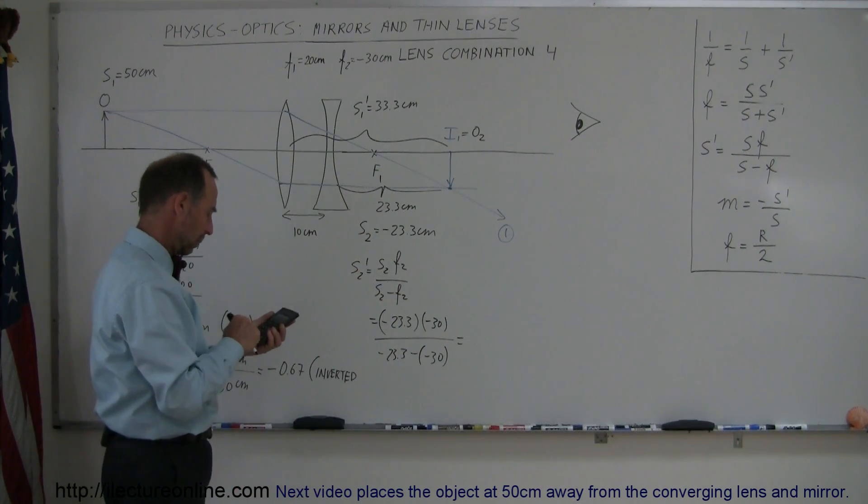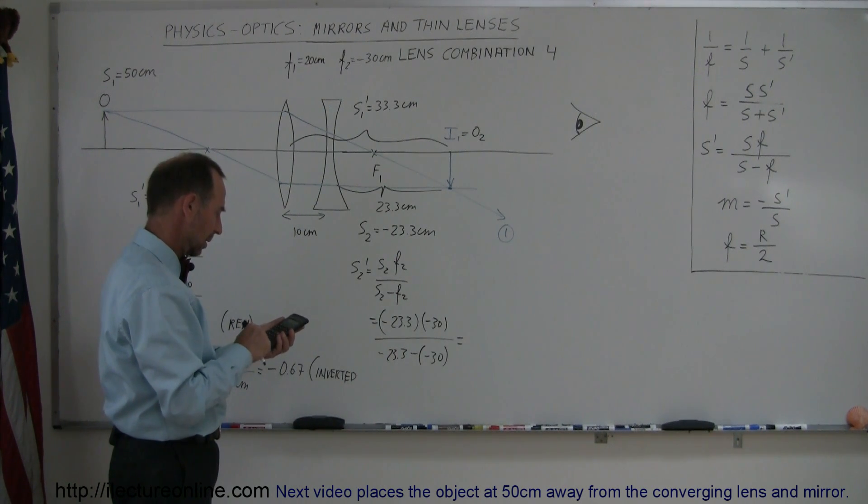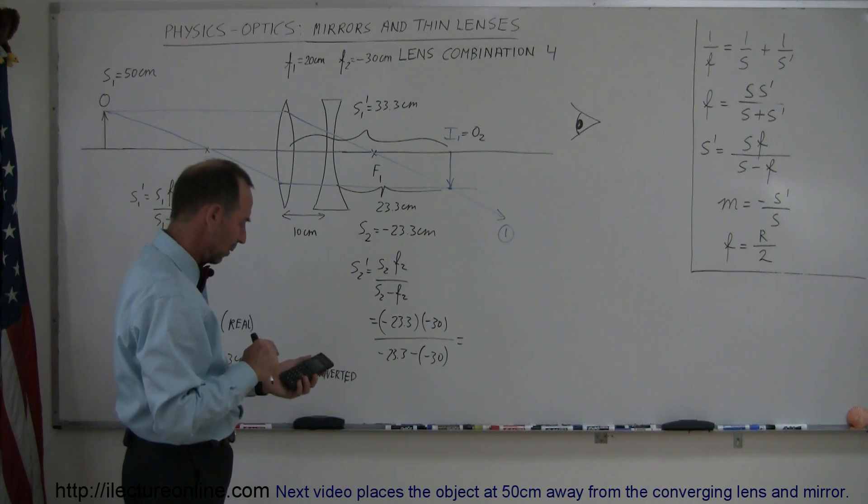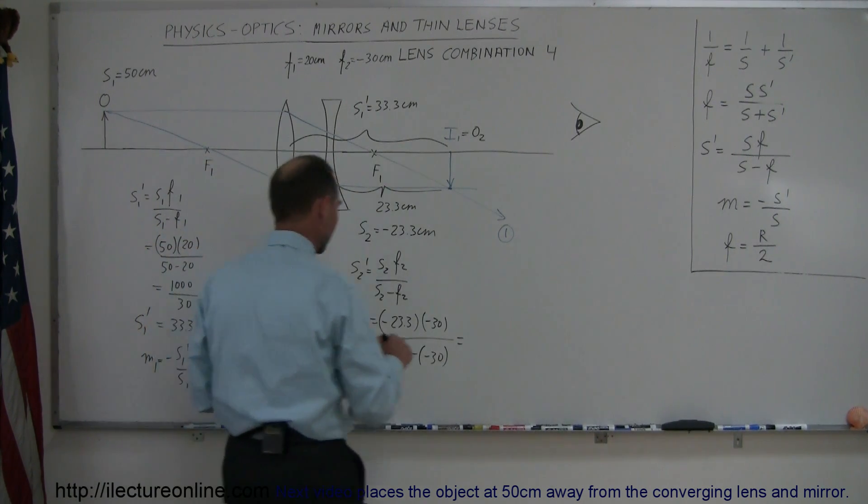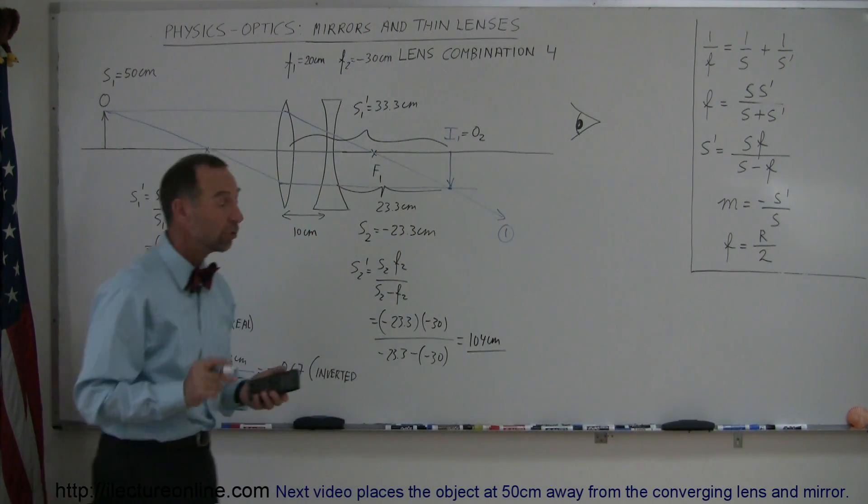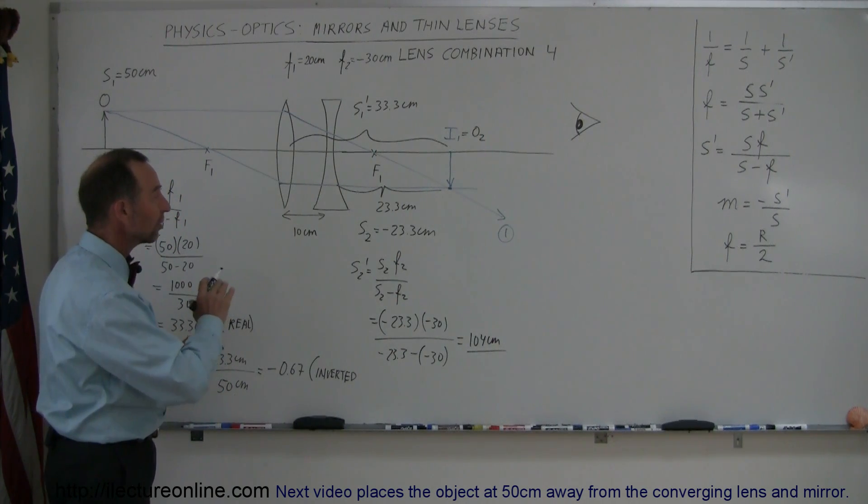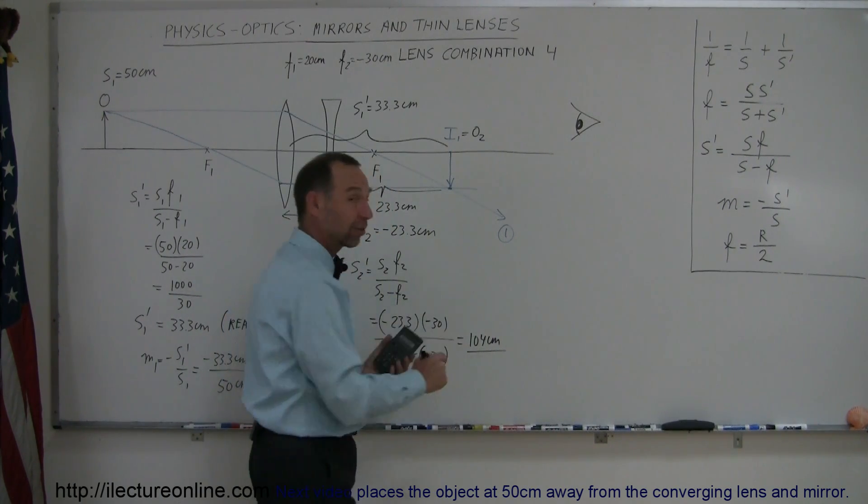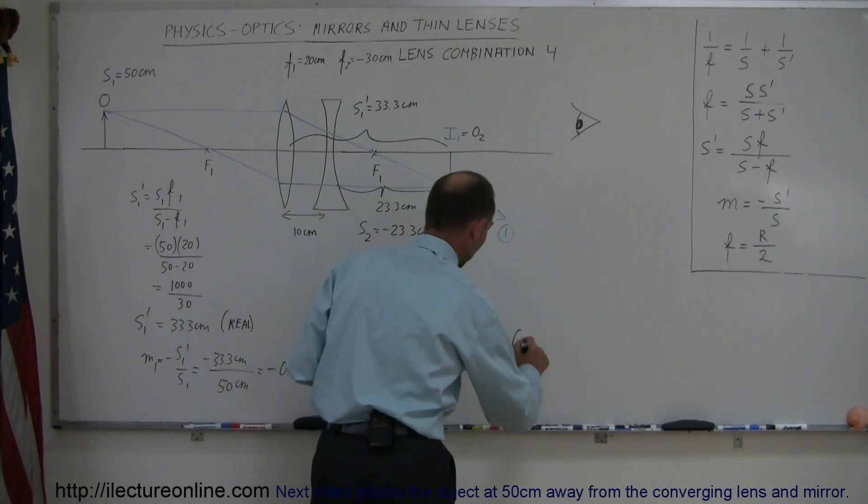So 23.3 times 30 divided by positive 6.7 equals 104 centimeters. That's a positive 104 centimeters, which means the second image is 104 centimeters past the second lens. Since it's a positive number, it's a real image.